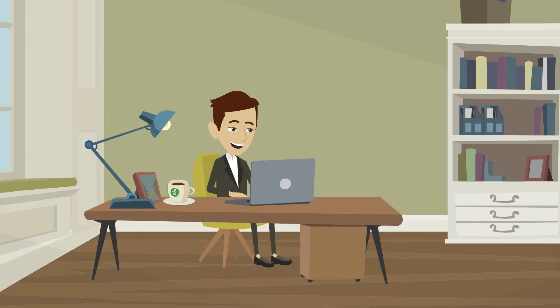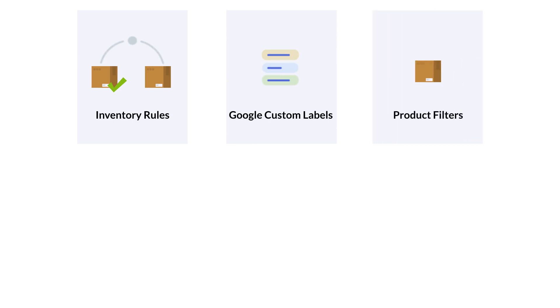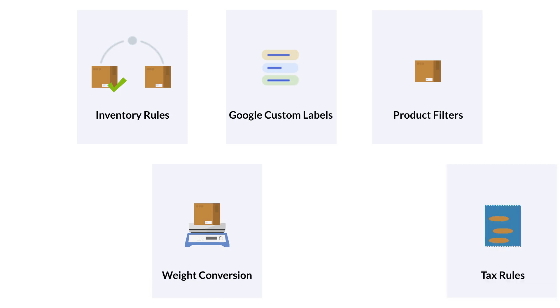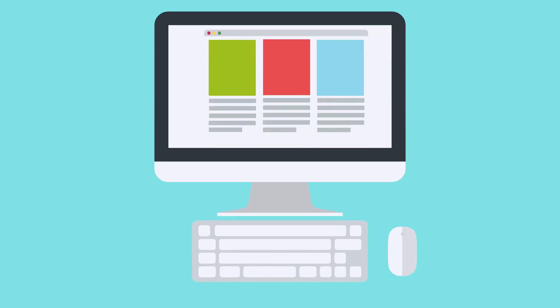Feed Genie allows you to completely customize your feed with powerful tools like inventory rules — change feed data without editing your product. Custom labels let you create custom Google labels for running custom promotions. Product filters create a feed on a subset of products based on custom rules. Weight conversion converts weight from one unit to another. Tax rules create custom tax rules based on the country where your audience is located.